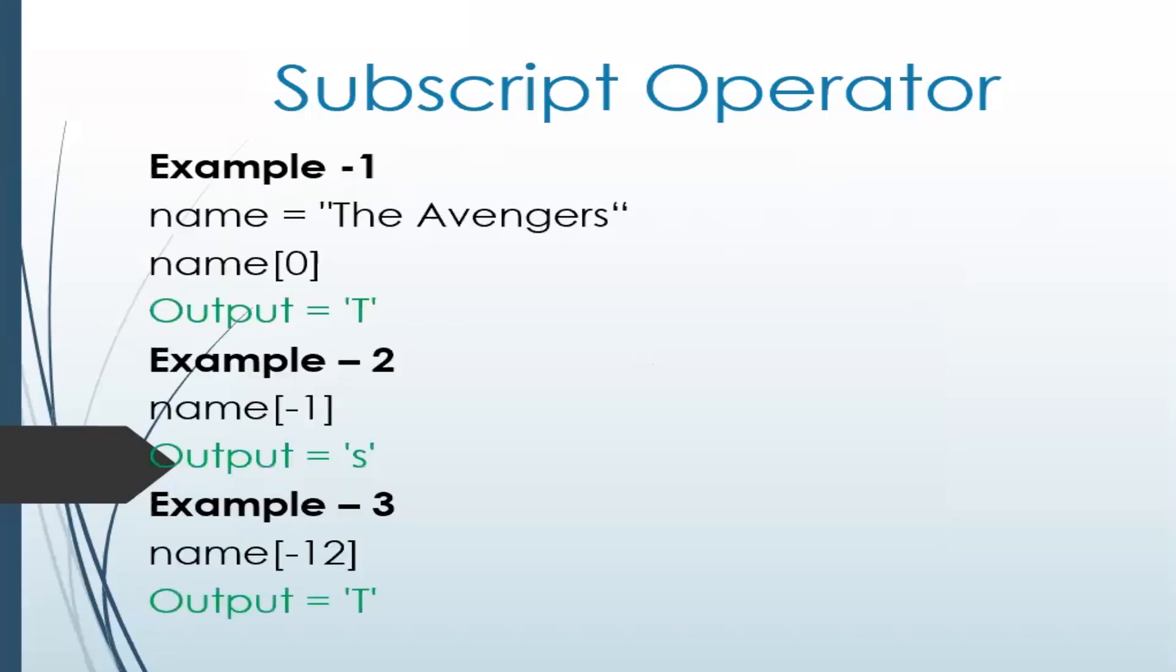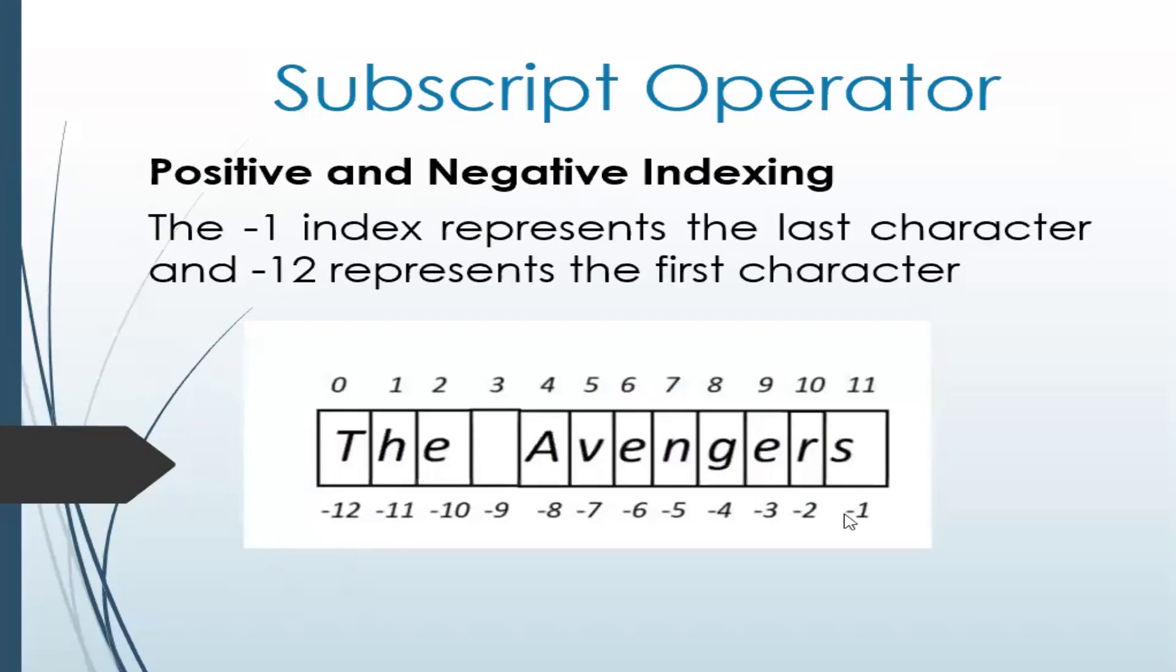So this is a very small example where you have 'The Avengers' and you are printing the 0 position, so it will print 'T'. The second example is when you have the same variable name, 'The Avengers', and when we are printing minus 1, so it is printing 's' because it is taking the negative index minus 1.